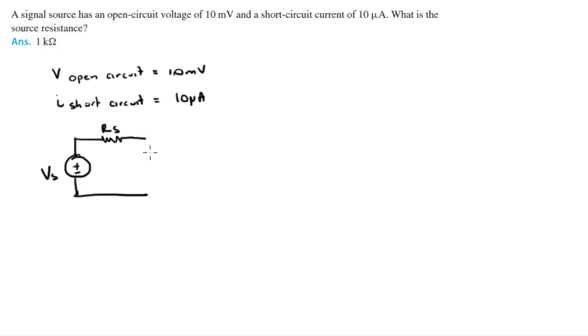The open circuit voltage is 10 millivolts, so you know that VS equals 10 millivolts. Since there is no current passing through, it doesn't matter the resistance of RS. There is no voltage drop, so you're going to measure directly the voltage at the source.